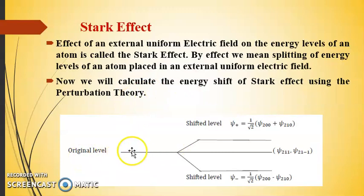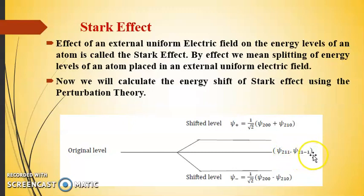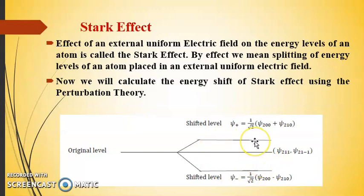Here you can see we originally have a single line which corresponds to four different states: ψ₂₀₀, ψ₂₁₀, ψ₂₁₁, and ψ₂₁₋₁ — all in the absence of an external electric field. But when the electric field is applied, there is a splitting in the energy levels: two of the states remain unaffected and two get split. In effect, we have three energy levels, with two energy levels shifted by a certain amount, which we will calculate in this lecture.